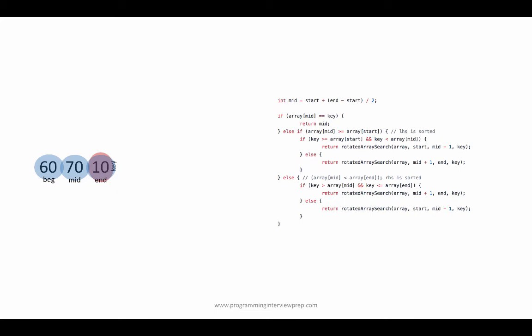Now again, beginning is at 60, mid is at 70, and end is at 10. This time, the sorted side is from beginning to mid, because array[beginning] is less than array[mid]. Again, 10 is not in the sorted sequence from 60 to 70, so we could discard everything on the left hand side of mid. We are now left with a single element which is the key we are looking for, so we return the index of that element, in this case mid.